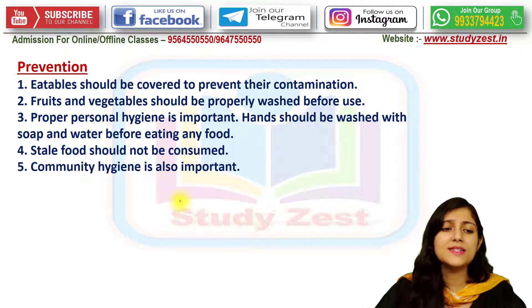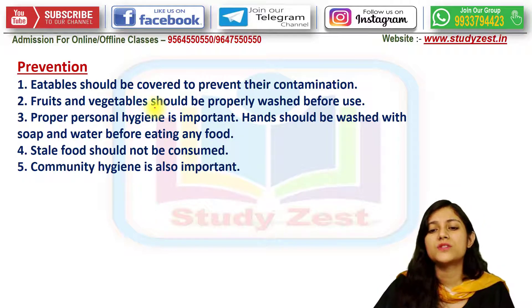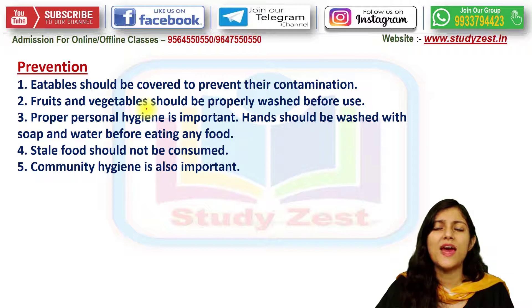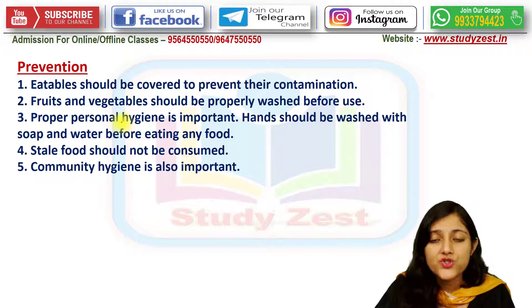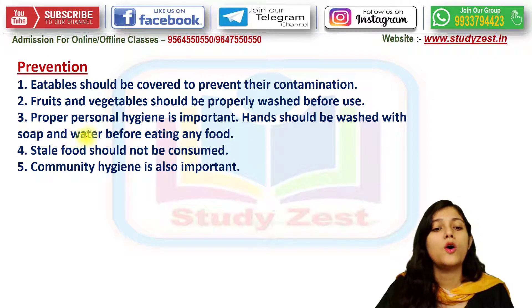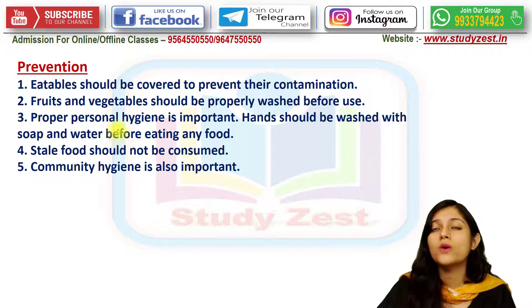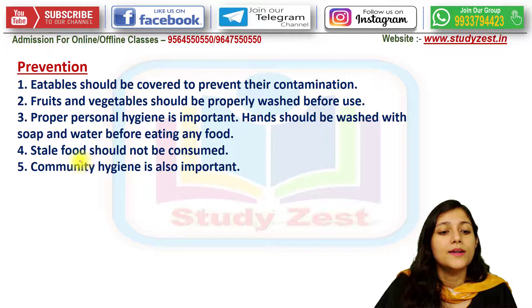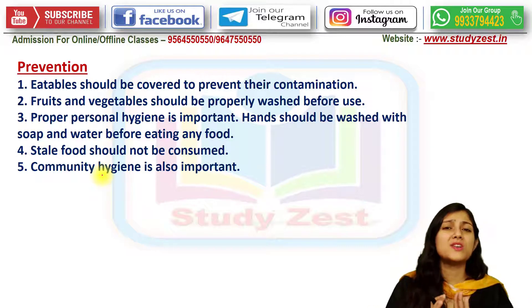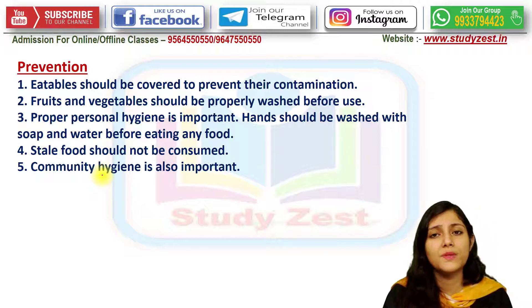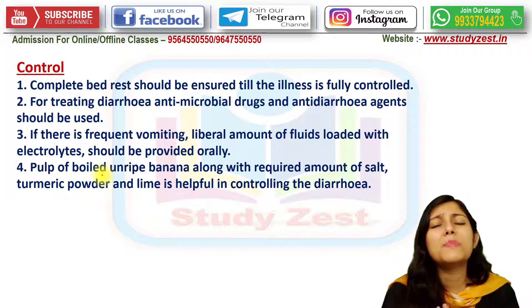For prevention: fruits and vegetables should be properly washed, and all contamination must be avoided. Proper personal hygiene is very important — hands should be washed with soap and water, or sanitizer if soap is unavailable. Community hygiene is also important, and unsafe food should not be eaten.